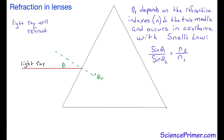The refractive index of a material is a function of its density. The greater a material's density, the higher the refractive index. Air has a refractive index of 1, and in this example the prism is made of a clear plastic with a refractive index of 1.5.